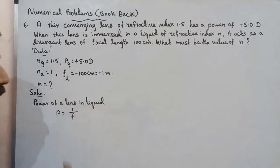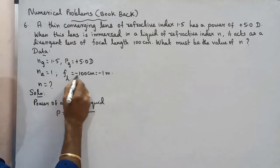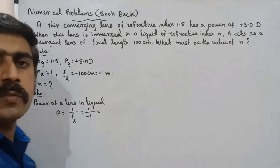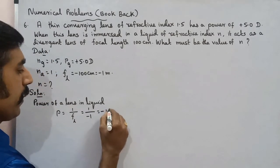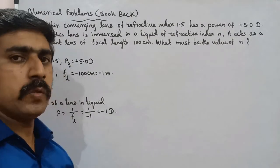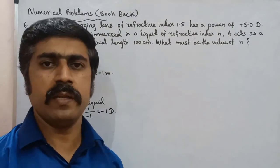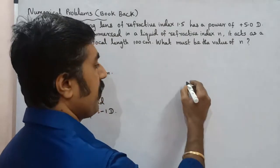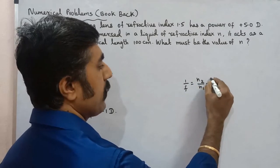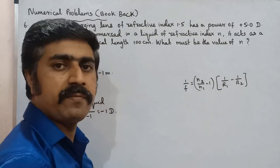Power P is equal to the reciprocal of the focal length: P = 1/f. For the lens in liquid with focal length minus 1 meter (since it is diverging), PL = 1/(−1) = −1 diopter. Now, the lens maker's formula is: 1/f = (n2/n1 − 1) × (1/R1 − 1/R2).